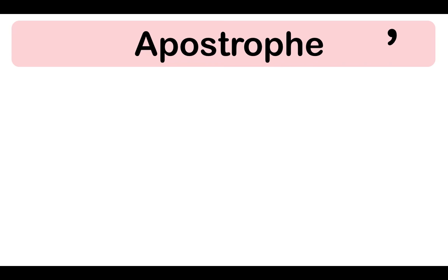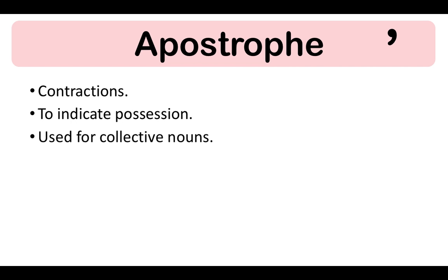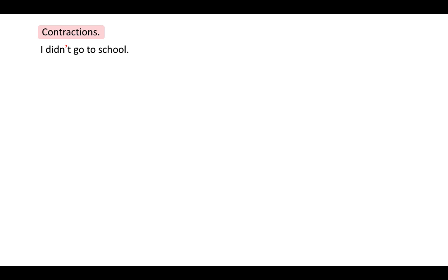Apostrophes are used with contractions to indicate possession. They are used for collective nouns and to indicate owners of a noun. Contractions are shortened versions of a word. For example: 'I didn't go to school' — the apostrophe is used where the letter is missing. 'Did not' becomes 'didn't'. Another example: 'come on' becomes 'c'mon'. Contractions can be formal or informal.